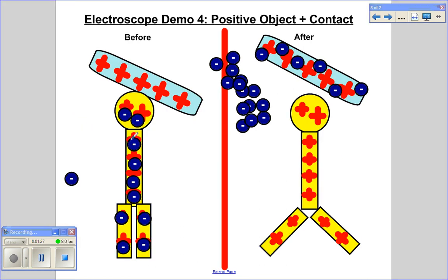And so remember, electrons are negatively charged. The rod is positively charged. Opposites attract. And so what will happen is electrons will actually move to the rod.